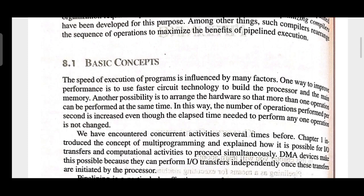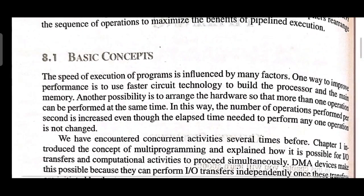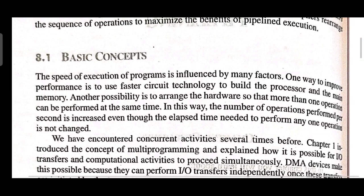The speed of execution of a program is influenced by many factors. One way to improve performance is to use faster circuit technology to build the processor and the main memory. Another possibility is to arrange the hardware so that more than one operation can be performed at the same time — that is what parallel computation is. We have to arrange the hardware so it is capable of performing more than one task in a given interval of time.